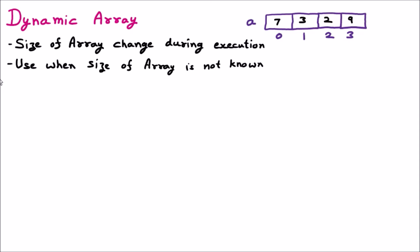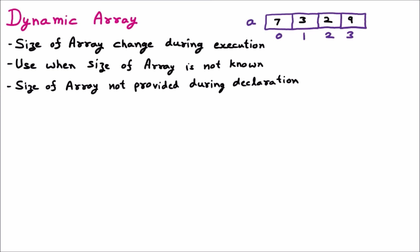When using a dynamic array, we don't have to provide any size during the declaration. We simply write the array name, say A, with empty brackets. The empty bracket signifies that this is a dynamic array; we will define the size later during execution. However, we cannot change the data type — if declared as integer type, it remains integer only throughout the program.